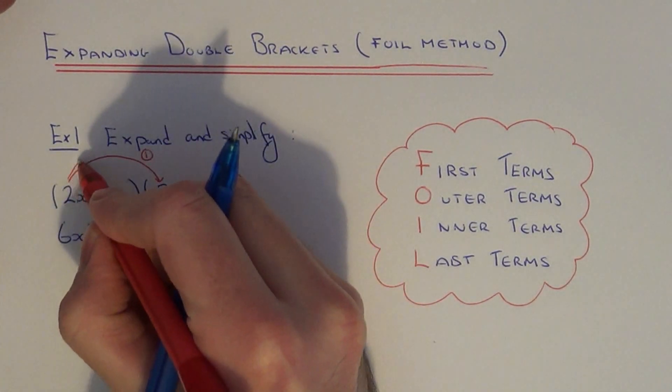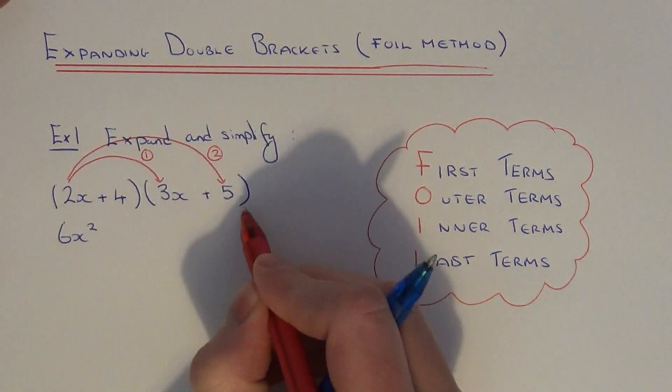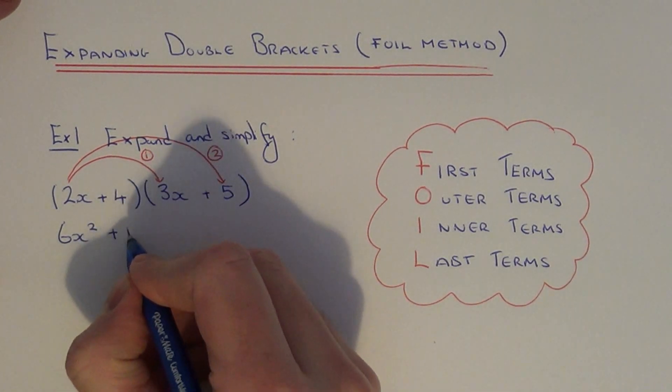Then you multiply the outer terms. You do 2x times by plus 5. So 2x times 5 is 10x.